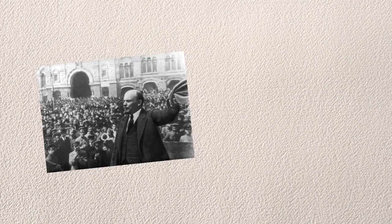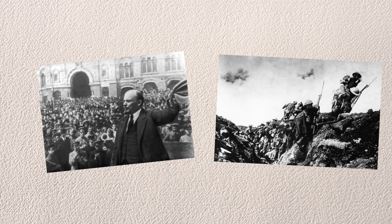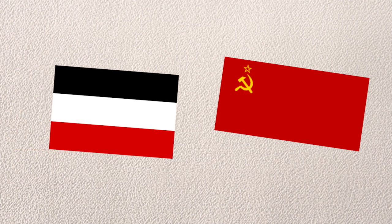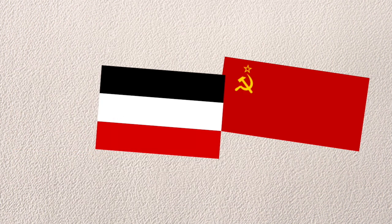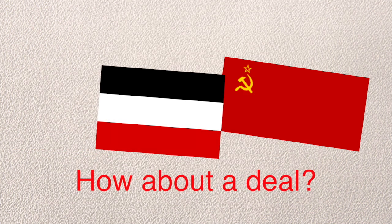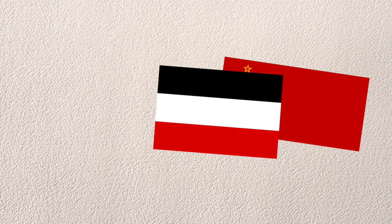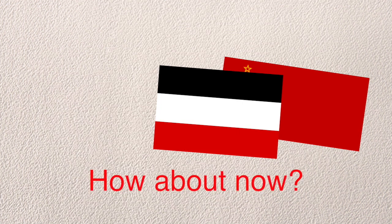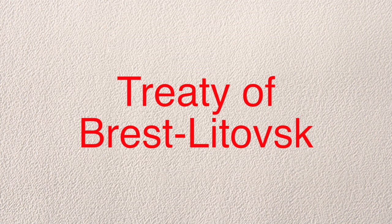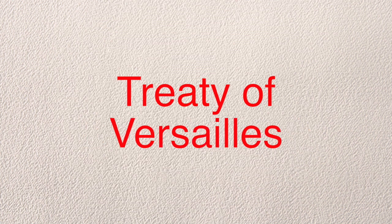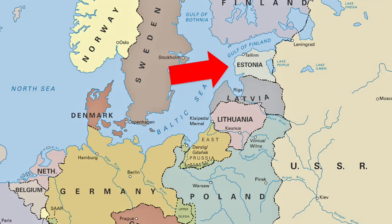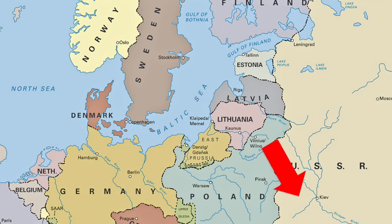Rewinding a bit: the revolution was happening alongside World War One, and the Germans were still invading. They went to the Soviets and said, "Hey Soviets, how about a deal?" And the Soviets said no. So they kept fighting. Then the Germans said, "How about now?" And the Soviets said, fine. This was the Treaty of Brest-Litovsk. This, plus the Treaty of Versailles, made Finland, Estonia, Latvia, Lithuania, and Ukraine independent.